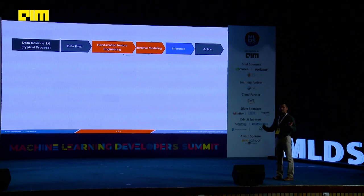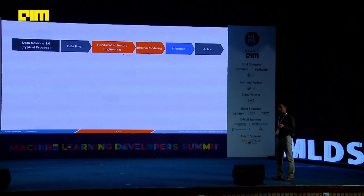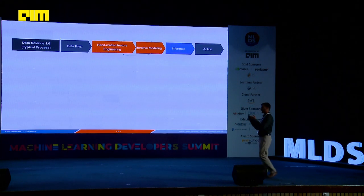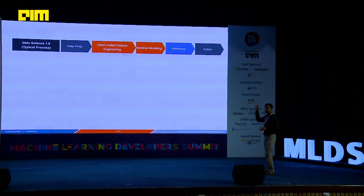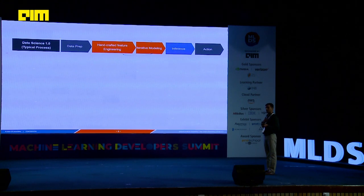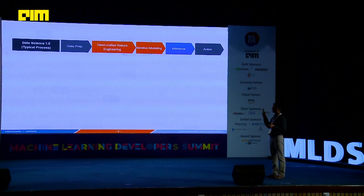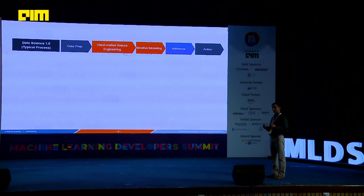What does a typical data science process look like today? We do a lot of data prep, and then a lot of feature engineering — handcrafted feature engineering, relying on our knowledge and research. Then we build the model using techniques like gradient boosting and decision trees, and there's an inference pipeline followed by action. The challenge with this orthodox way of doing things is it can take weeks — in cases we've worked with customers, it used to take about three or four weeks, and has even taken months to get feature engineering right.